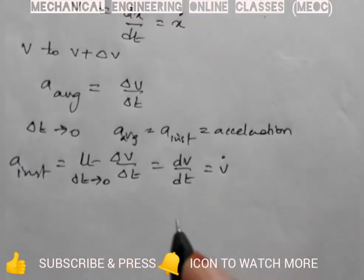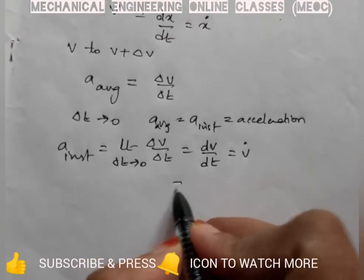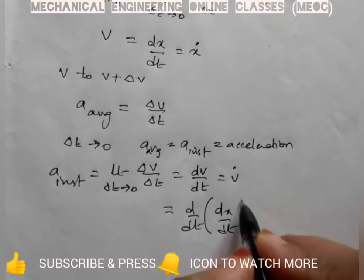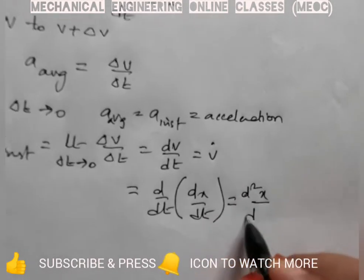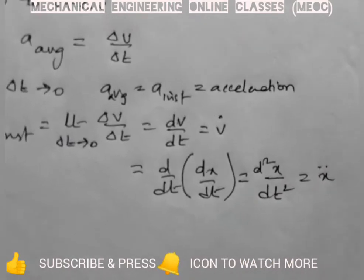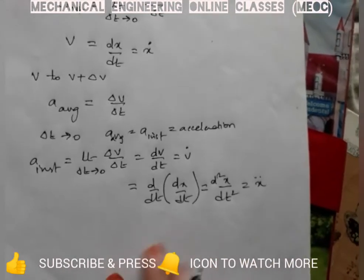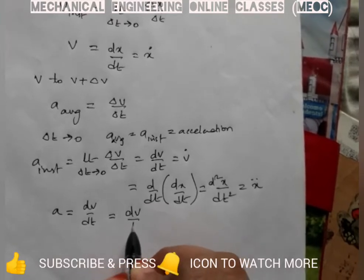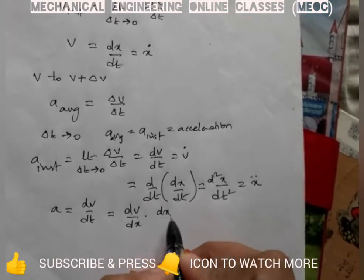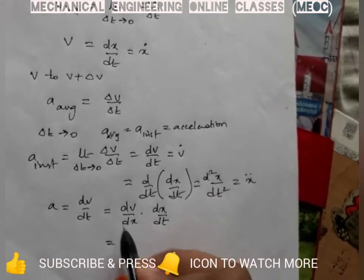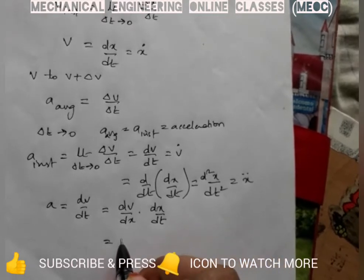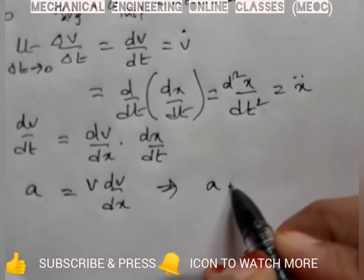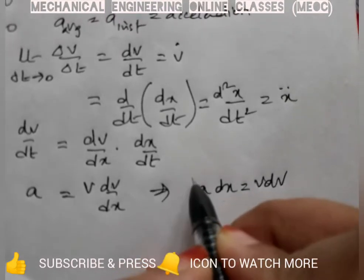So a instantaneous equals the limit as delta t tends to 0 of delta v by delta t, giving dv by dt — the first derivative of v. This can also be written as d by dt of dx by dt, which is d squared x by dt squared, the second derivative of displacement. Also, using the chain rule, since a equals dv by dt, we can write this as dv by dx times dx by dt, which gives v dv by dx. Therefore, a dx equals v dv — another important relation.